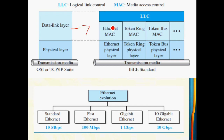The Ethernet standard is IEEE 802.3. Token Bus is 802.4, and Token Ring is 802.5.